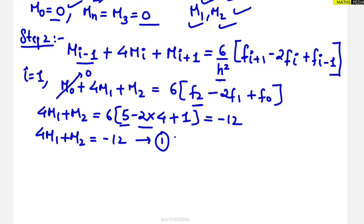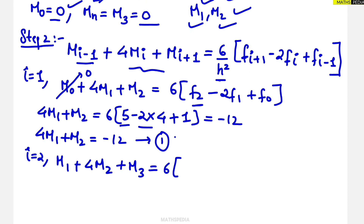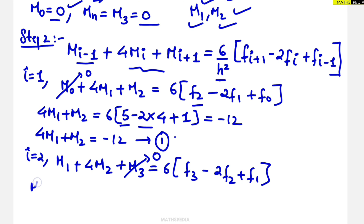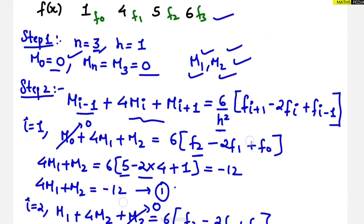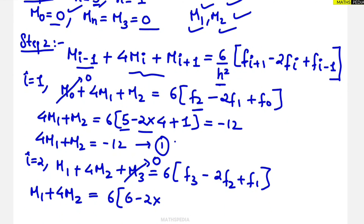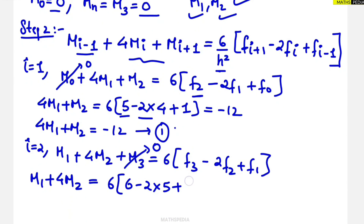Next, substituting i equals 2 into the formula gives M1 plus 4M2 plus M3 equals 6 times (F3 minus 2F2 plus F1). Since M3 equals 0, this becomes M1 plus 4M2 equals 6 times (6 minus 10 plus 4), which equals 0. So our second equation is M1 plus 4M2 equals 0.